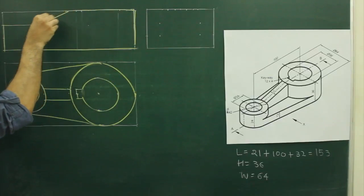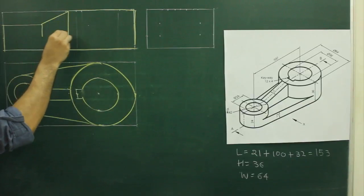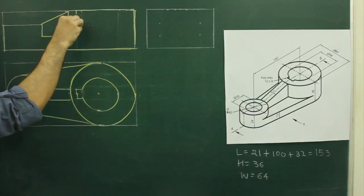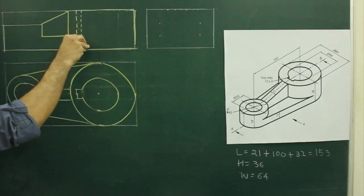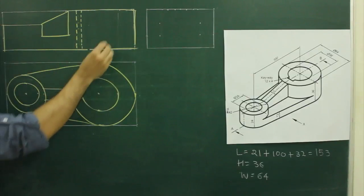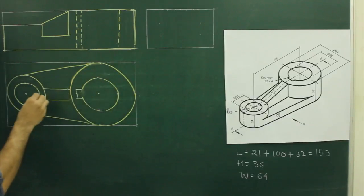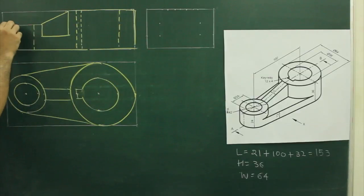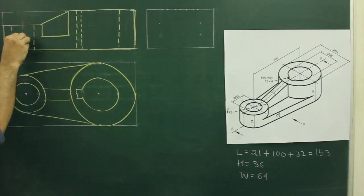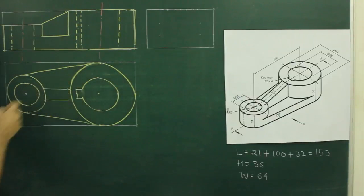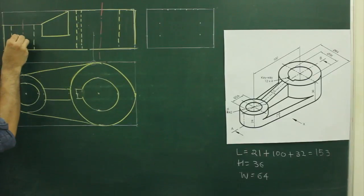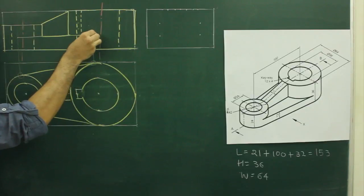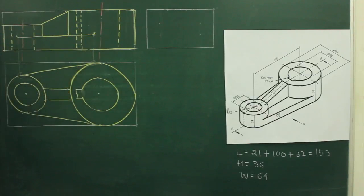I will project from the top view. First I will draw the smaller circle, then project the dotted lines for each feature. You can draw the central line as well. Now we need to draw the tangent — for that we need to project from here as well as from here. Then we can extend this line and show the slight taper outside. So we are done with the front view as well.